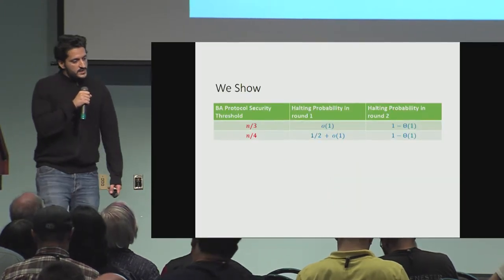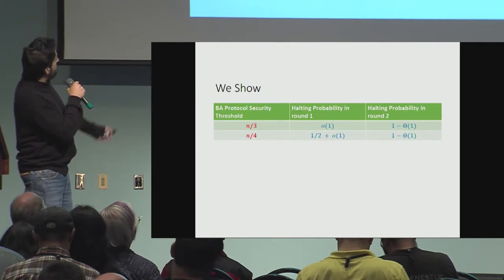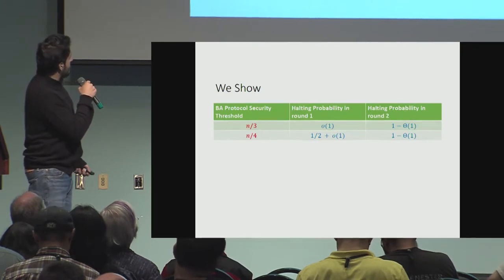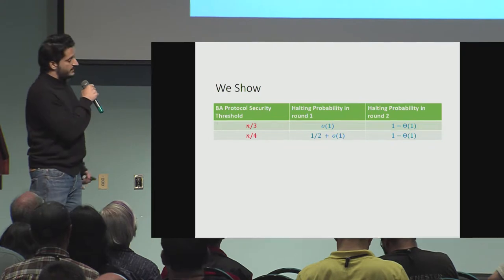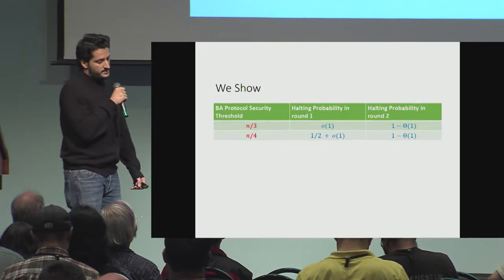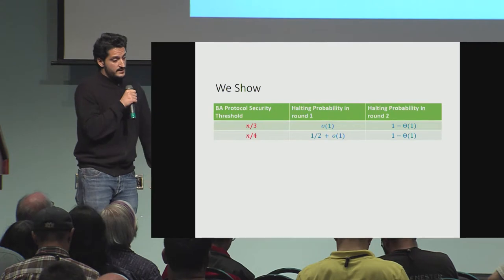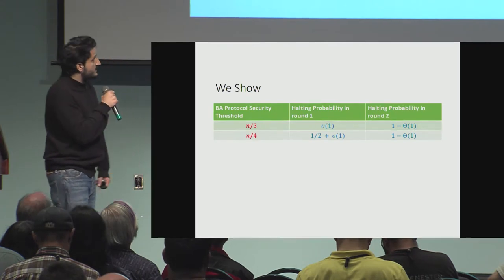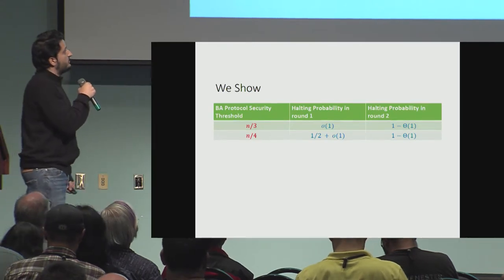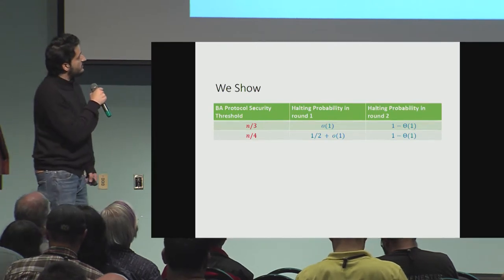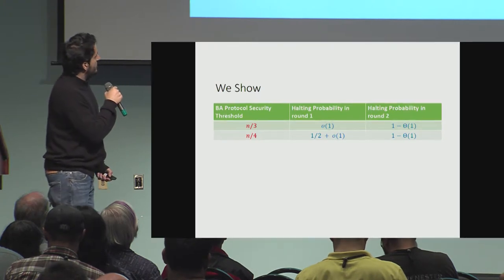So what do we show? We show that for BA protocols, if the security threshold is something like n over three — meaning at most n over three parties are corrupt — then the halting probability after one round is vanishingly small, and the halting probability after round two is far away from one.